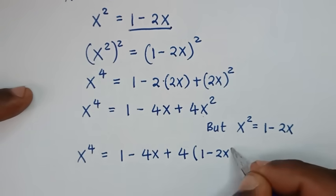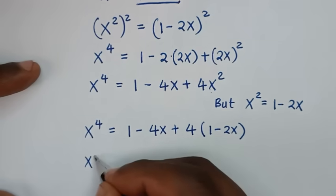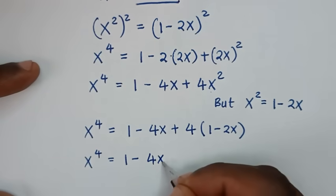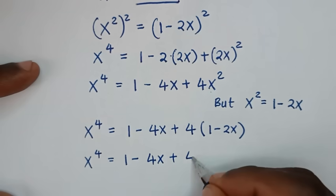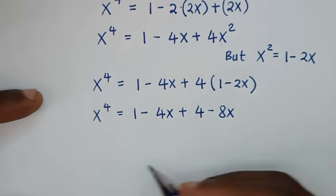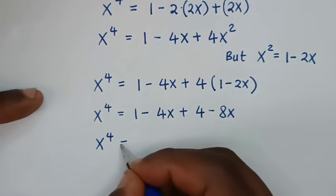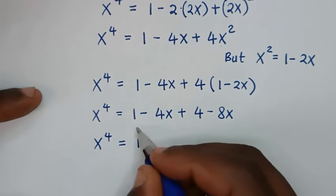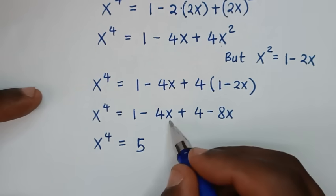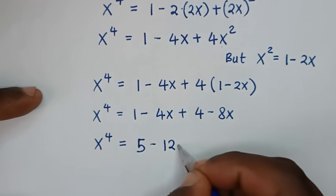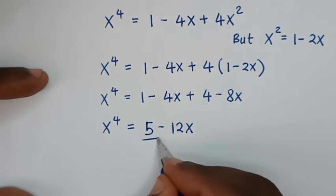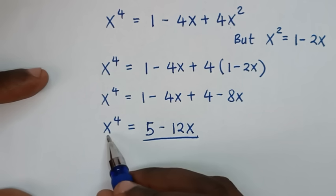Substituting x squared equals 1 minus 2x: x to the power of 4 equals 1 minus 4x plus 4 times bracket 1 minus 2x bracket. That gives 1 minus 4x plus 4 minus 8x. Collecting terms: x to the power of 4 equals 5 minus 12x.